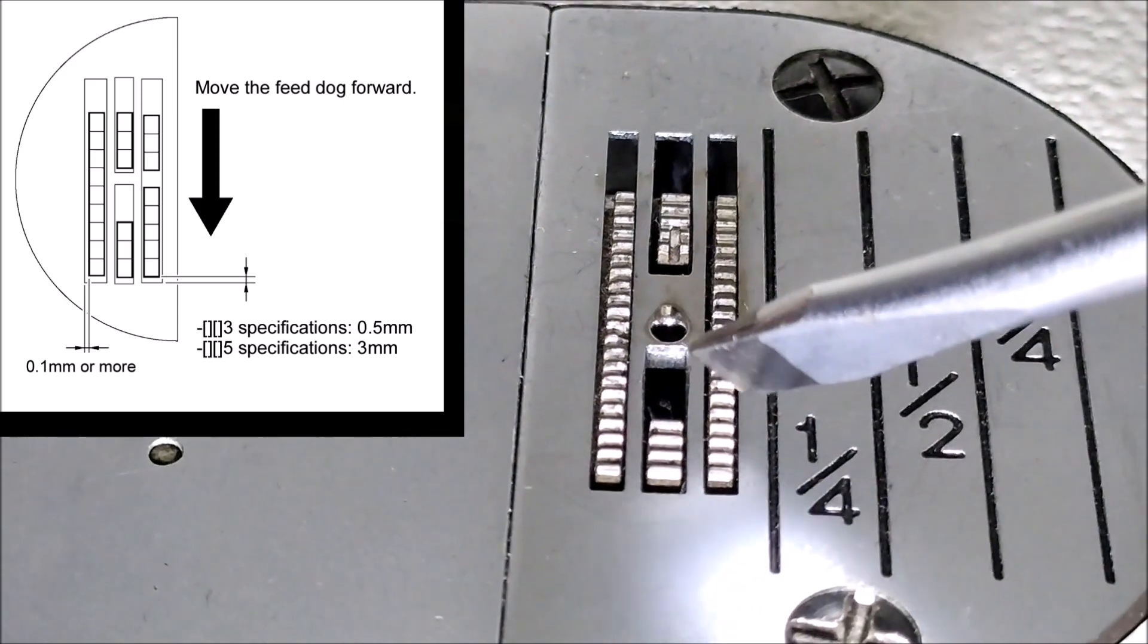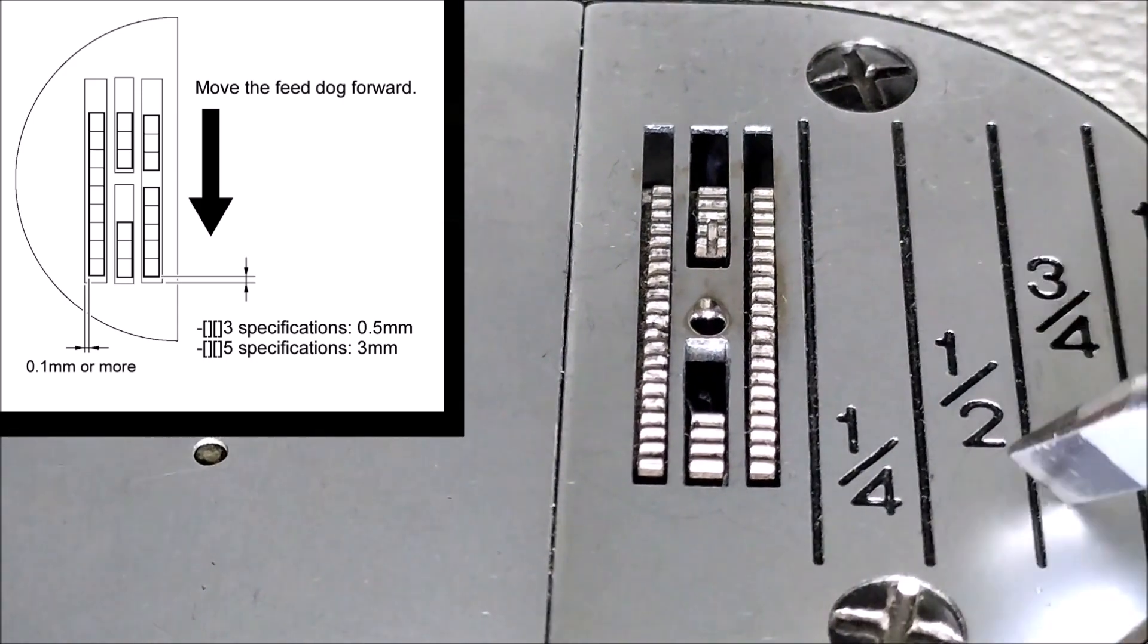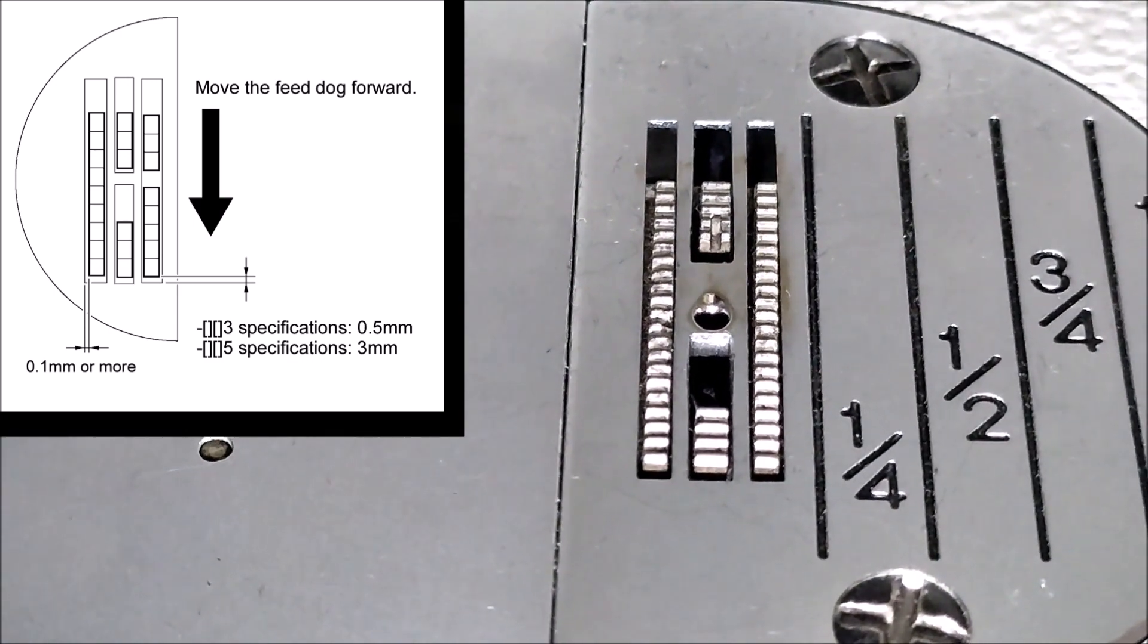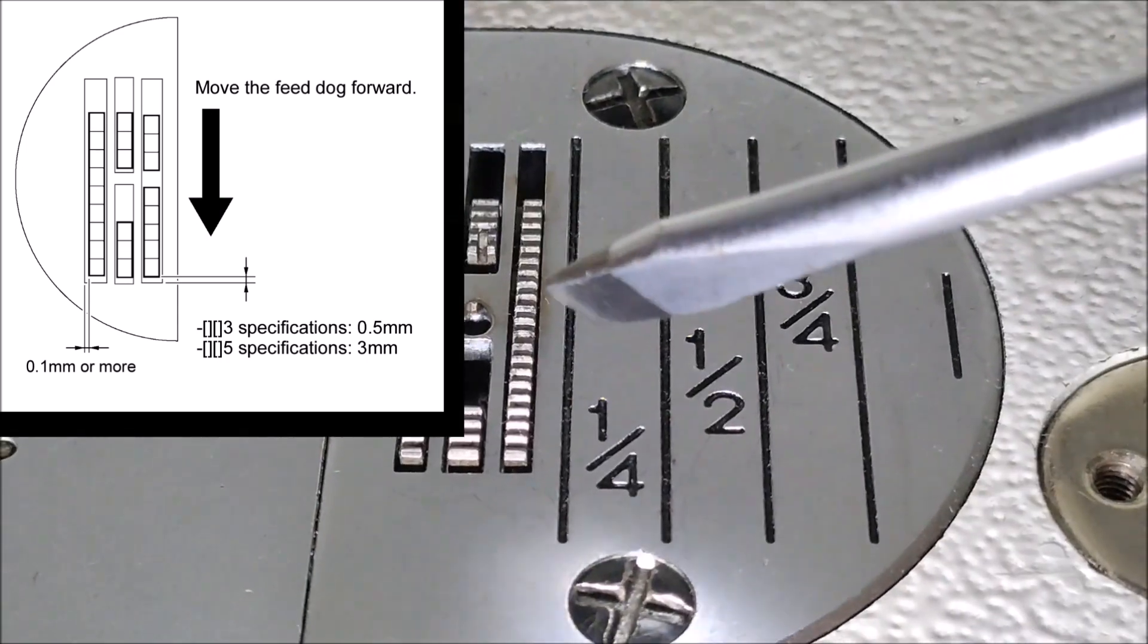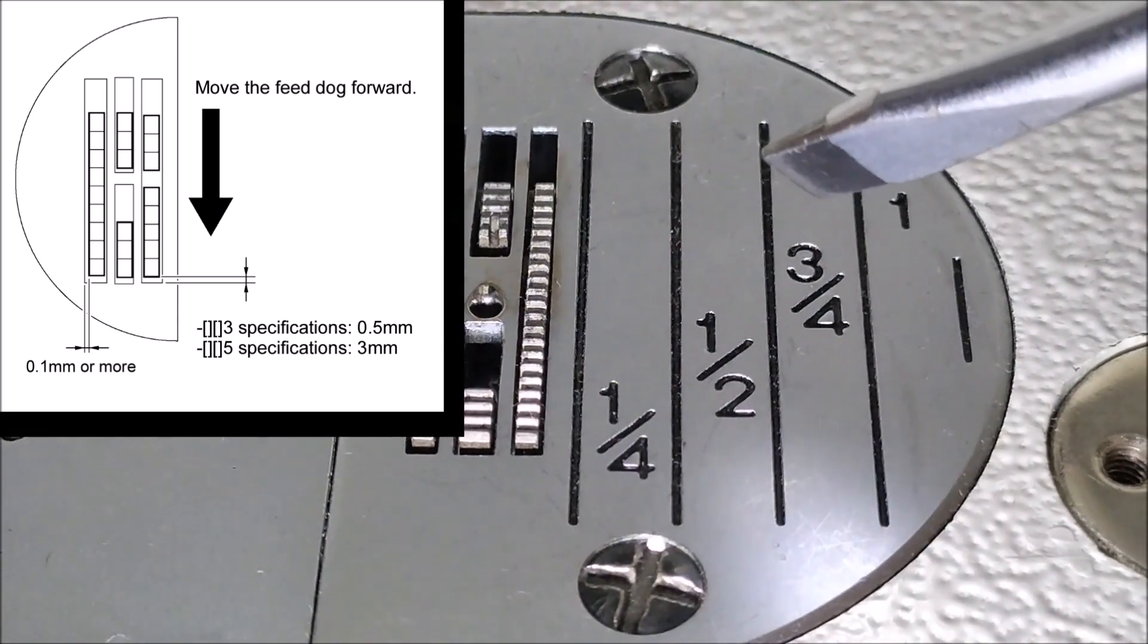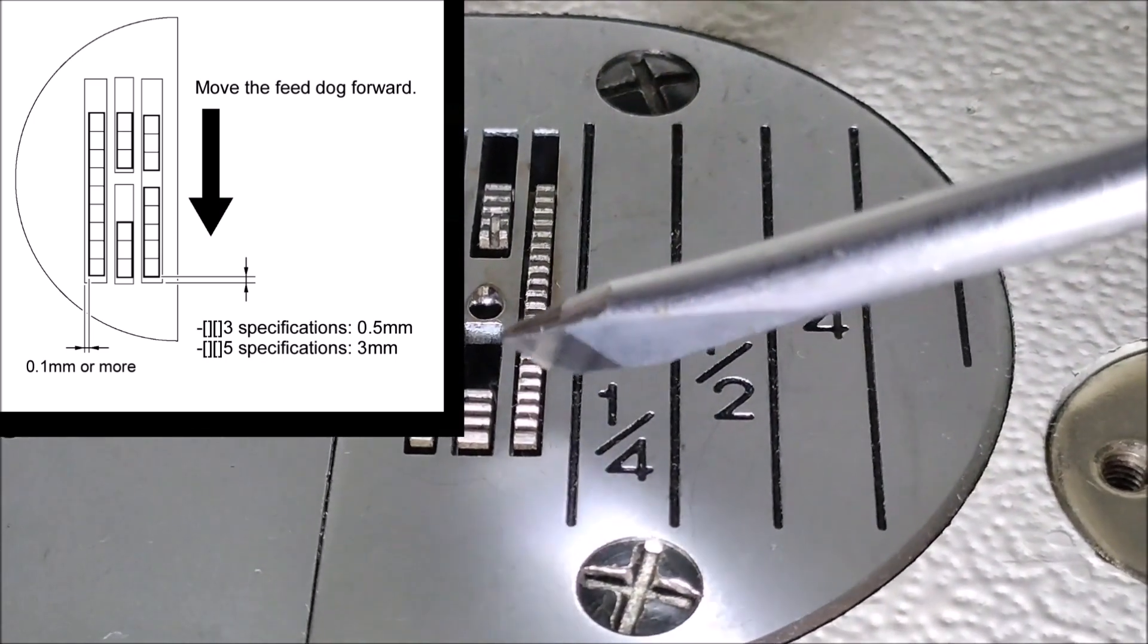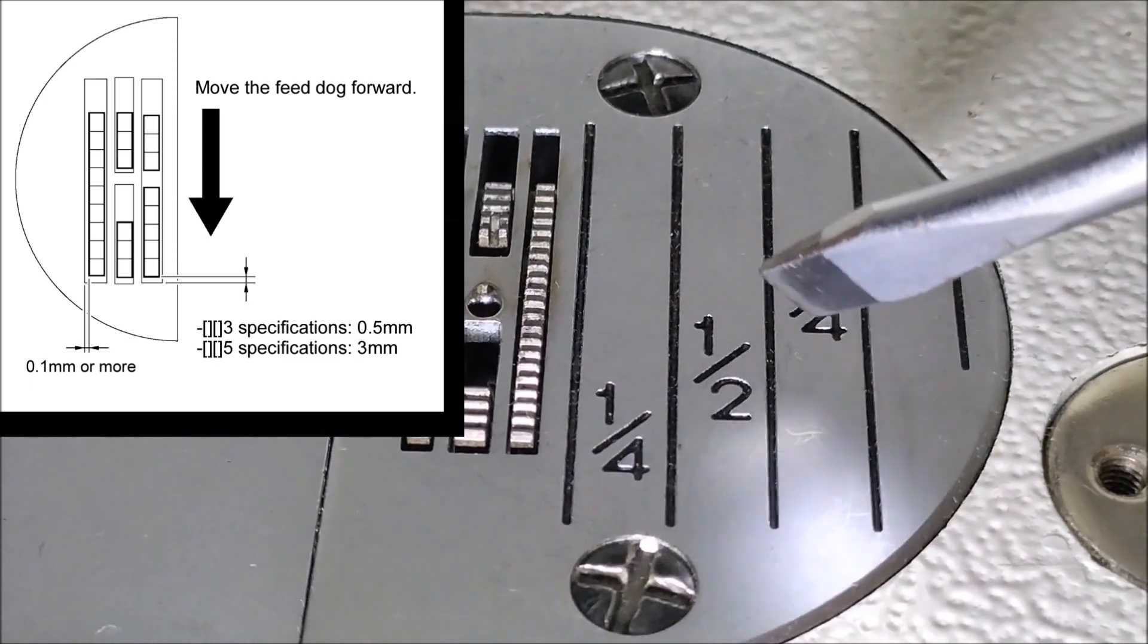The clearance from the feed dog to the needle plate should be 0.5 mm for 403 subclass model. And if we use subclass number 405 for heavyweight material, the clearance should be 3 mm from the needle plate to feed dog.